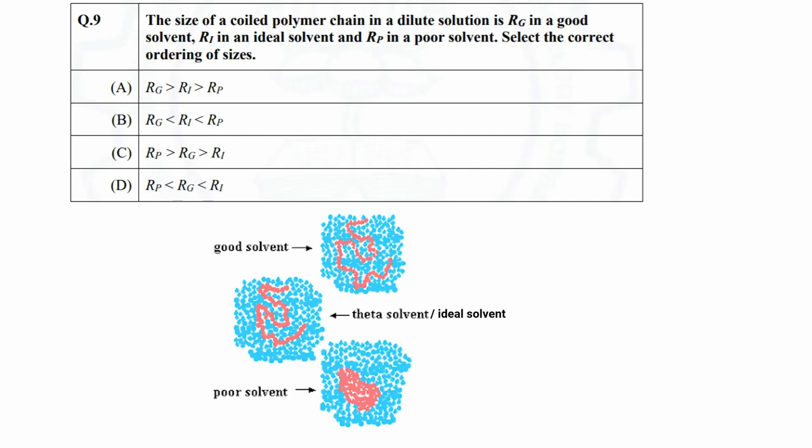The case will be completely opposite in case of poor solvent. Since in poor solvent, polymer chains would not like to be in contact with the solvent molecules, they will try to minimize the surface area by collapsing further into a highly dense polymer coil. As a result, the size of the coil will decrease. So the size of the polymer coil will be smaller than in ideal solvent. Based on these points, we can say that option A is the right order of size of the polymer coil in different solvents.